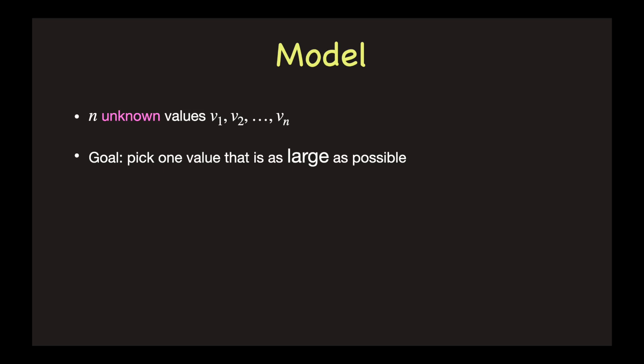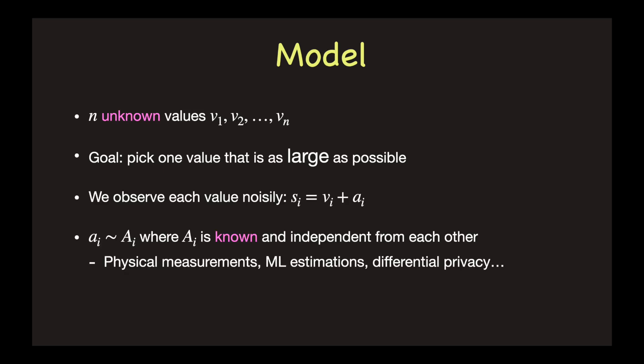Of course, there's not much we can do without any other information. So in our model, we can observe each value once, but our observations are noisy. We observe Si, which can be written as the true value Vi plus a noise Ai. Each noise Ai is drawn from a known distribution, capital Ai.